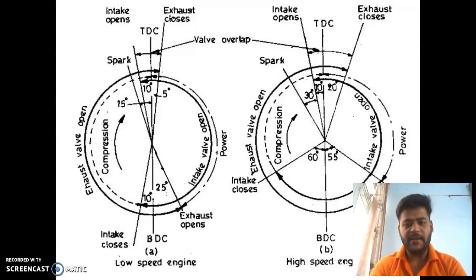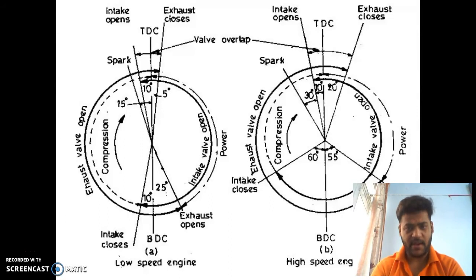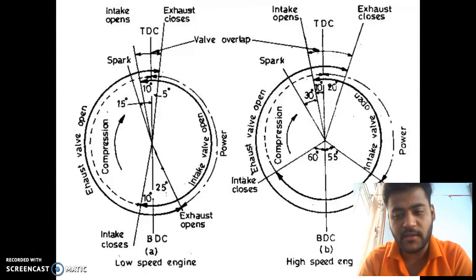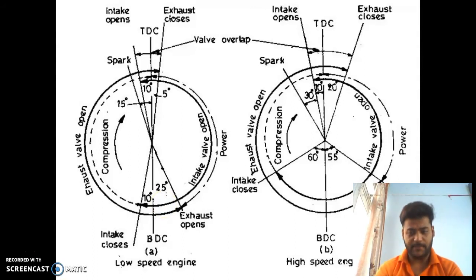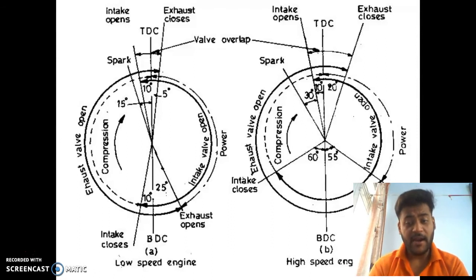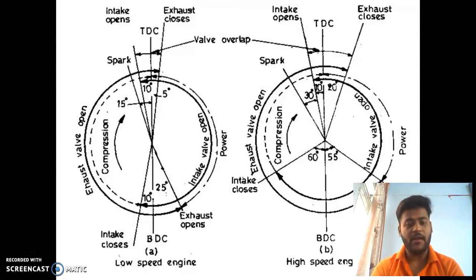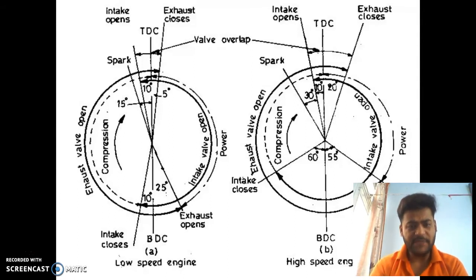When the piston reaches BDC the compression stroke starts, but the inertia of the fresh charge tends to continue moving into the cylinder. We can take advantage of this, so the inlet valve is closed 10 to 15 degrees after BDC so as to draw in maximum charge. But if it is more than 10 to 15 degrees, the charge will flow backward into the cylinder. This is decided according to the speed of the engine.